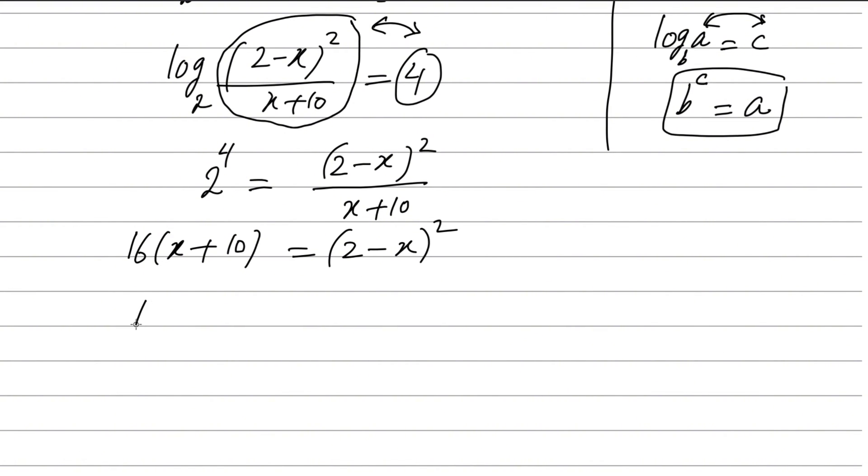16(x+10) = (2-x)². Now expand the right hand side. You can write here, right and left hand side, 16x + 160 = 4 - 4x + x². Expanding the square: square of 2 is 4, the product will be -4x and here x².